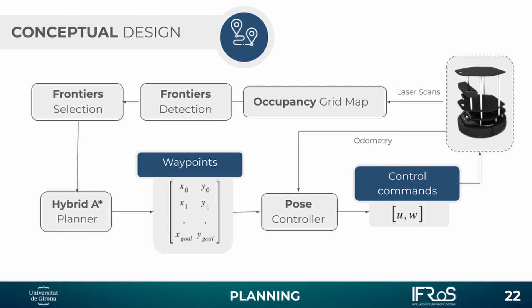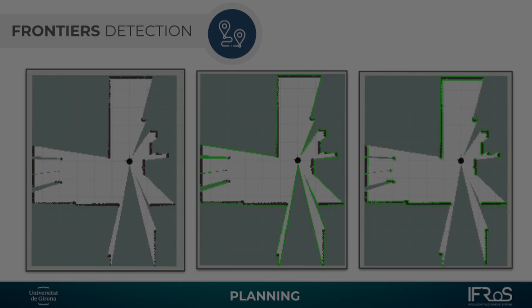This is the conceptual design. The laser scanner will be used to build the occupancy grid map. We will do the Frontier detection, Frontier selection, and then apply the Hybrid A* Planner. The motion controller will use the path generated by Hybrid A* Planner to do the motion control.